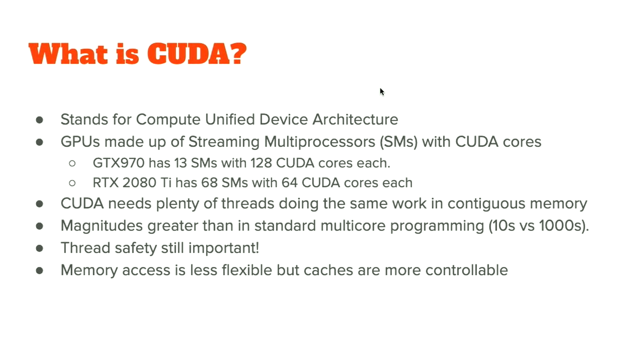To give you two examples, a GTX 970 has one configuration and an RTX has another. This gives you an idea of compute capability, but it's only part of the picture. CUDA really requires a lot of threads doing similar work in similar areas of memory, otherwise it doesn't work very well. One big difference from normal multi-core programming like OpenMP is that you have way more threads — thousands to tens of thousands versus just tens in CPU programming. Thread safety is still important, but memory access is also less flexible than a CPU, though you have more control of your caches.